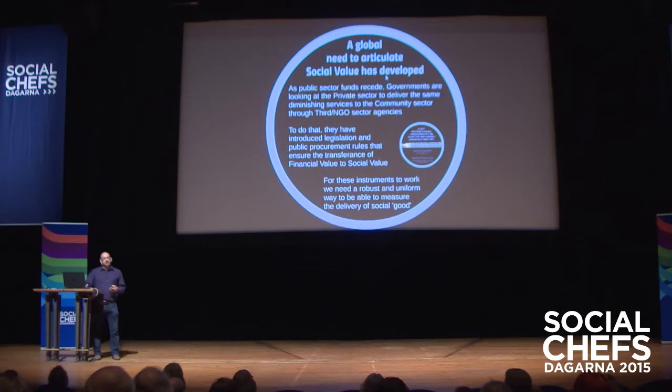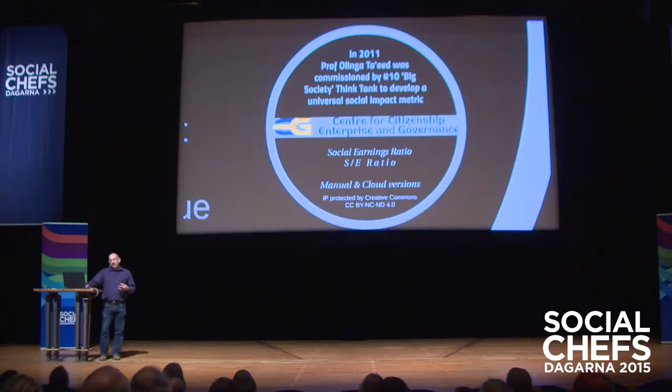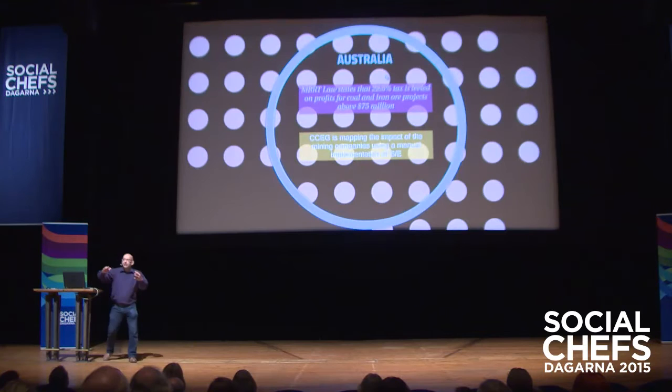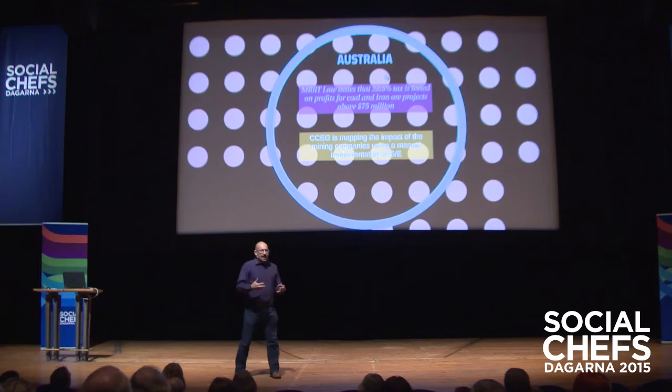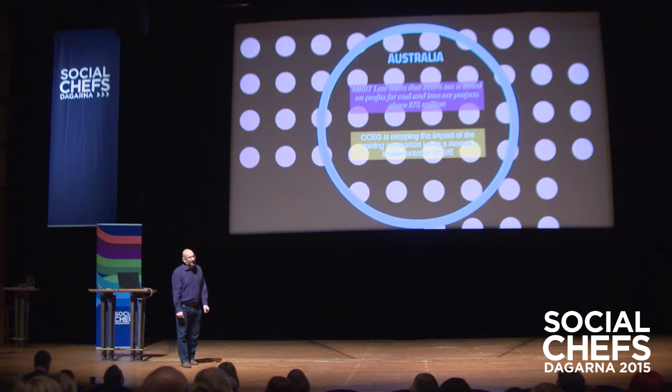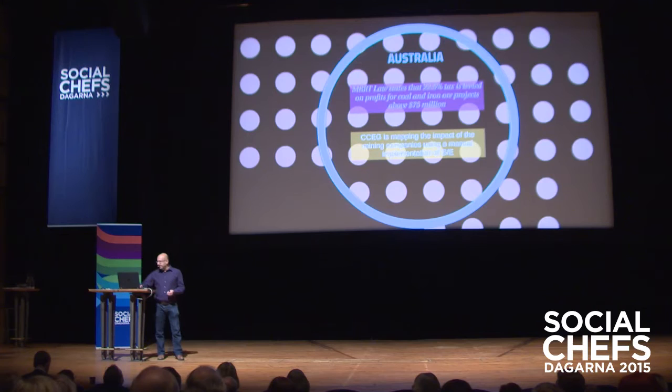We started advising governments around the world from 2011 about how to translate value. Every government since 2008 has a problem: there's not enough money for community services. As public sector funds recede, they look for the private sector to deliver services through the third sector and NGO civil society. It's a blended model. I've tried five different things — big projects, social investment bonds — and it's very difficult because they have different agendas. We finally landed on one area that has worked.